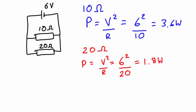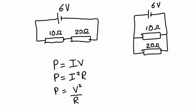So in the parallel circuit the 10 ohm resistor — the smaller resistance — is dissipating more power than the larger resistance. We can see this is because power is inversely proportional to resistance. To recap: in the series circuit the larger resistance dissipates more power because power is proportional to resistance. In the parallel circuit the smaller resistance dissipates more power because power is inversely proportional to resistance. Thank you.